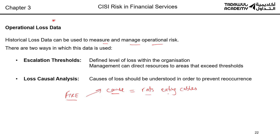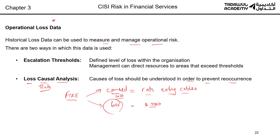So the cause of the fire was rats eating cables, and our losses amounted to $500. This is historical loss data. Historical loss data tells you two things: first, what caused the loss — we call that loss causal analysis. In this case, it was rats. Why is this important? It tells us what to do to prevent this from happening again: get an exterminator who will put rat poison in the walls to kill the rats.